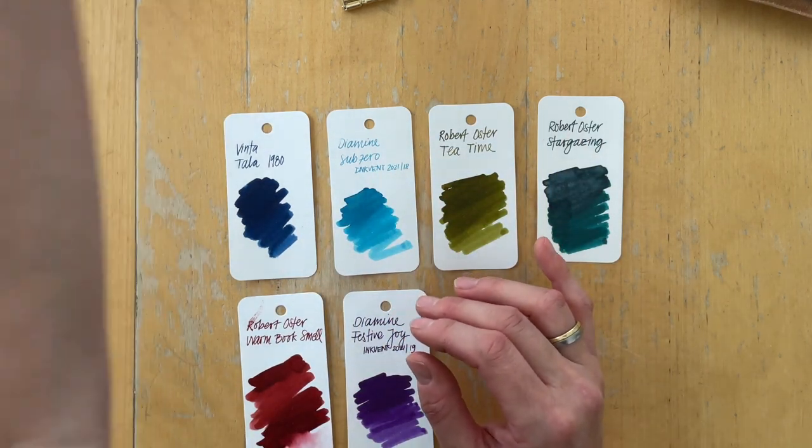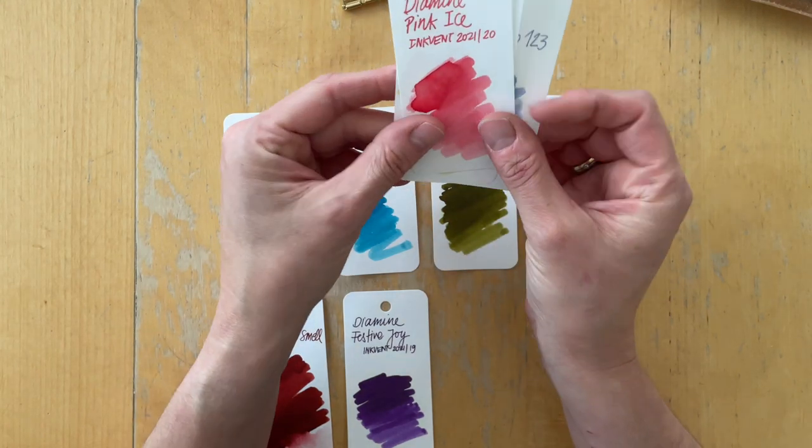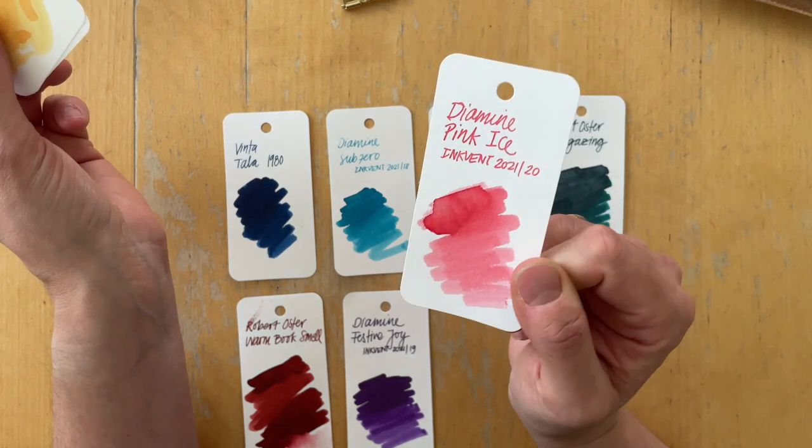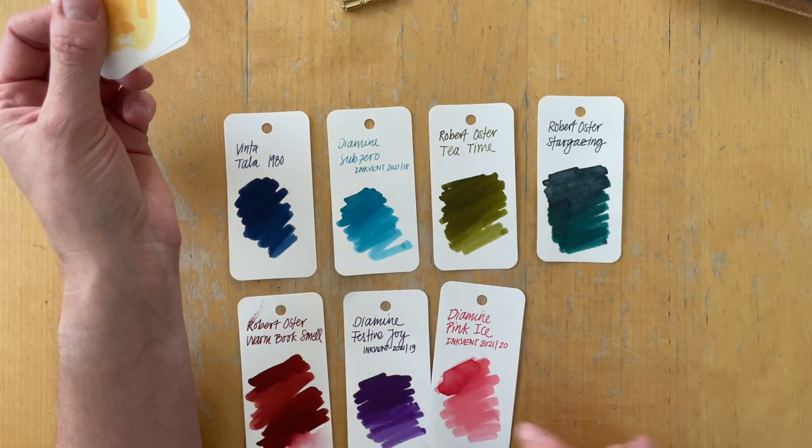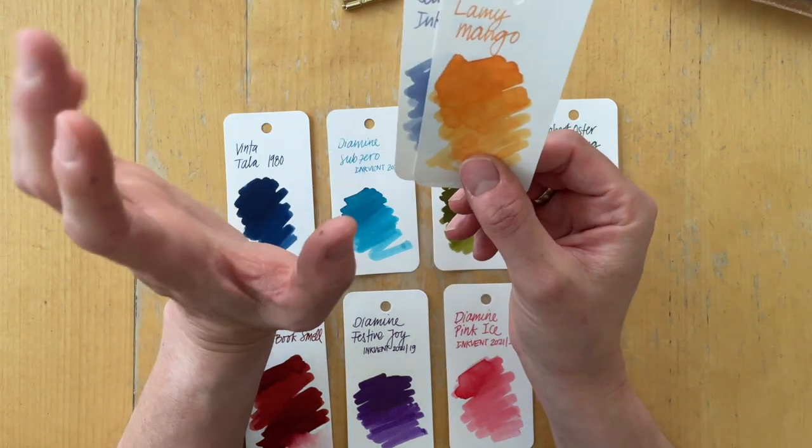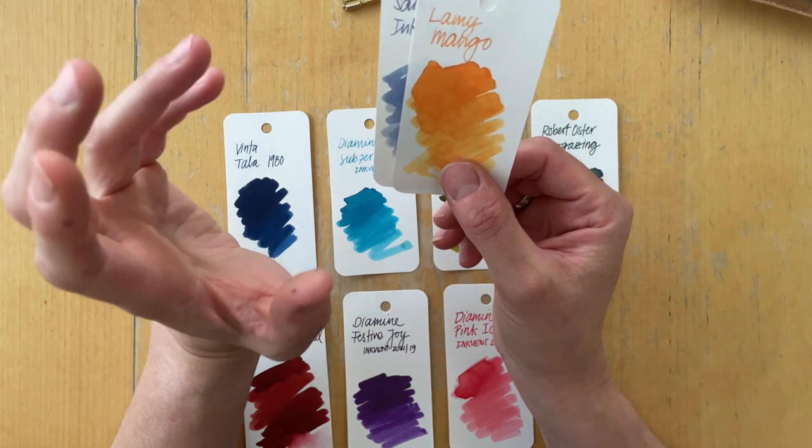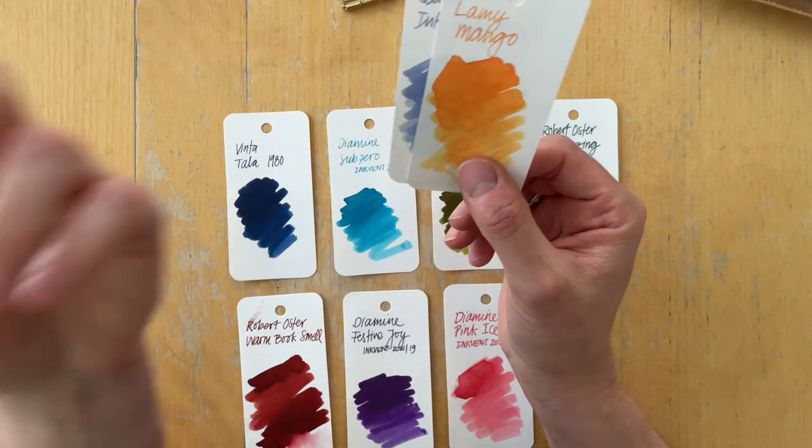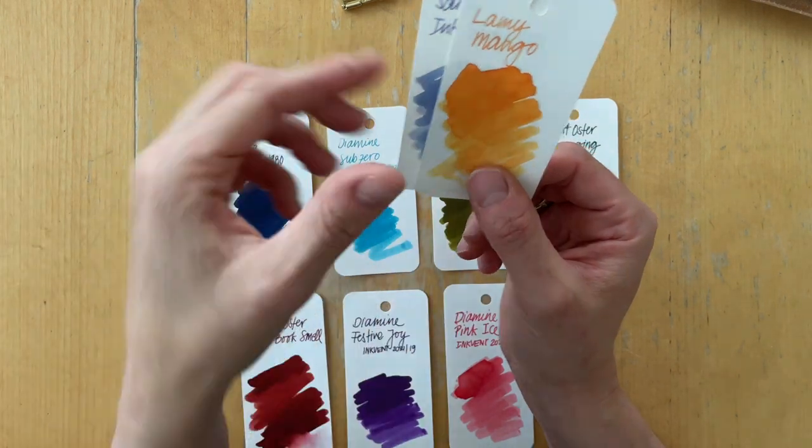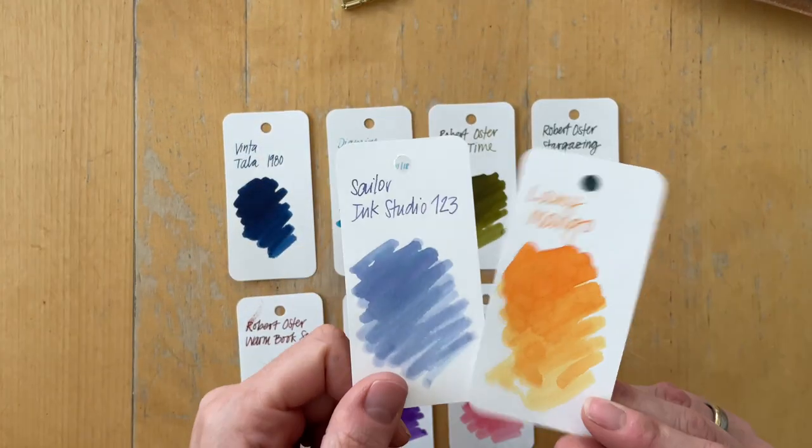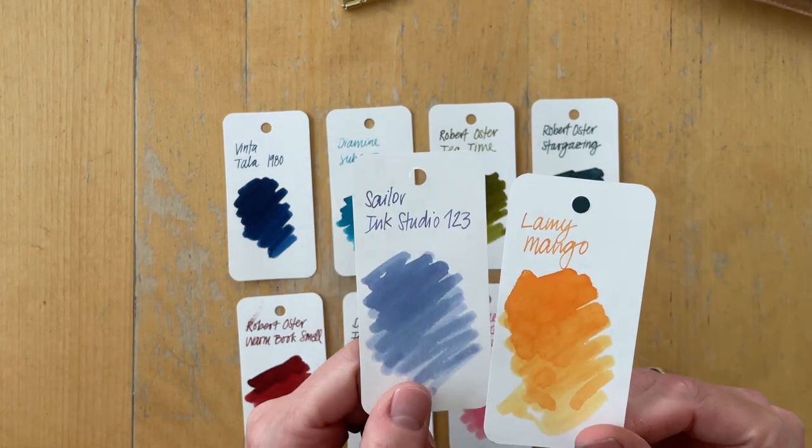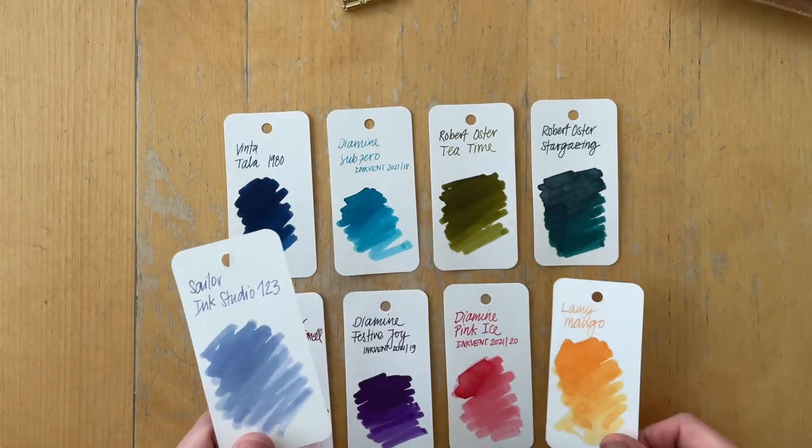And then I went into my samples, I picked another Diamine because I really want to use the Inkvent inks and get them all into pens and experience them. So I picked this one. And then I had a choice of four different lighter, brighter inks. And I have a video on my channel and I will link it in the cards up here where I swatched these as well as two more and picked these two to add to my ink rotation.